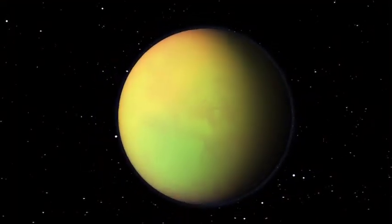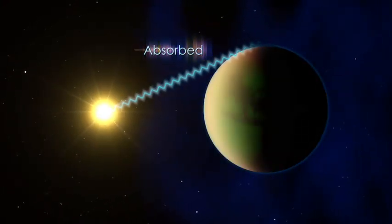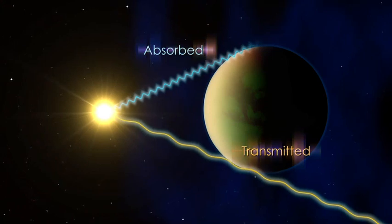As the planet crosses its star, its atmosphere absorbs certain wavelengths of light, or colors, while allowing other wavelengths to pass through.